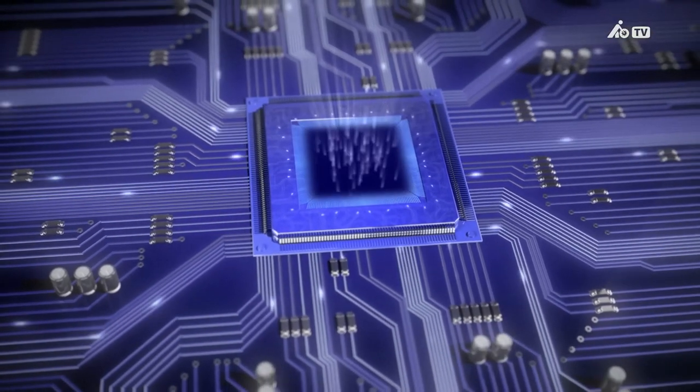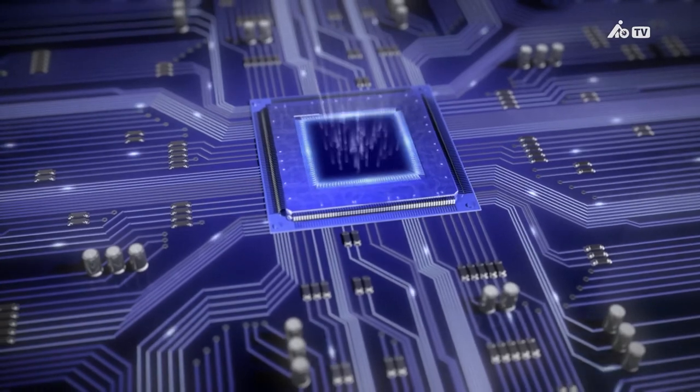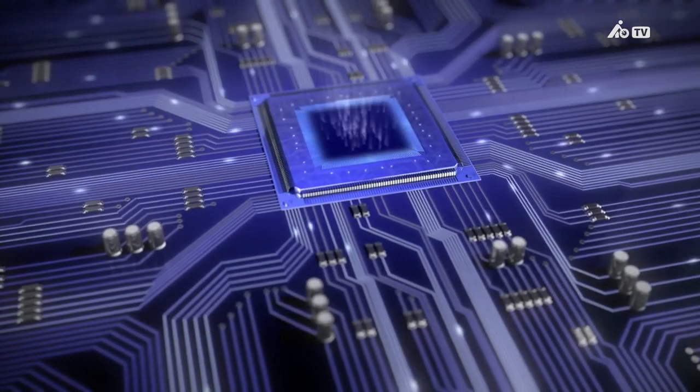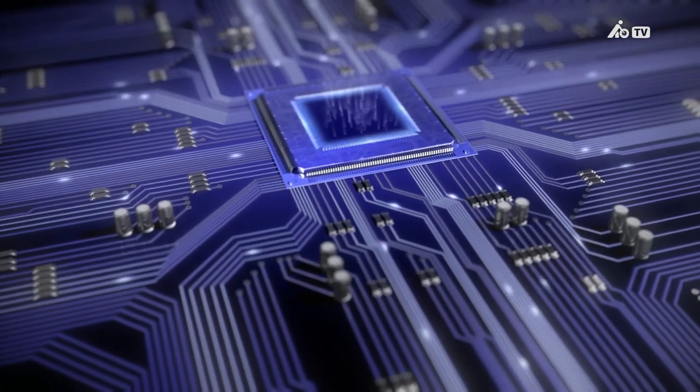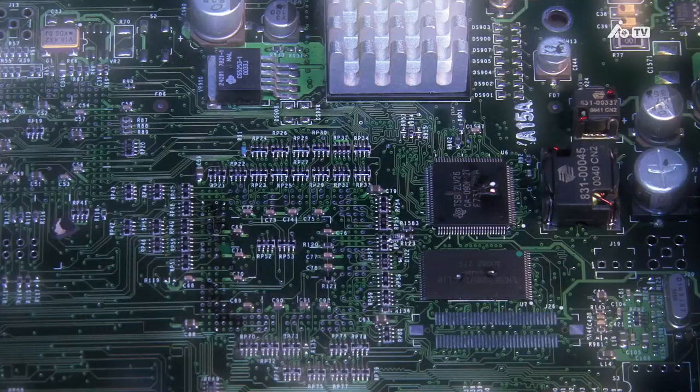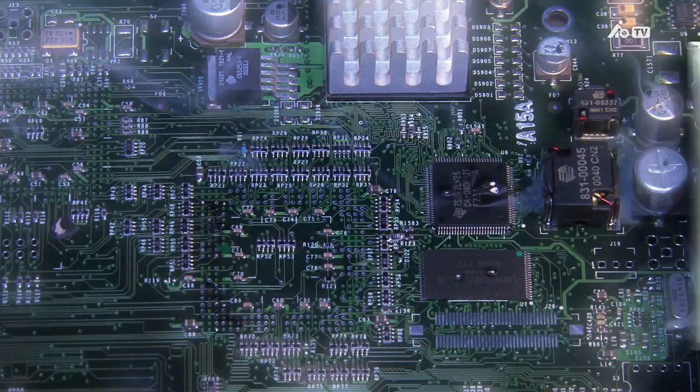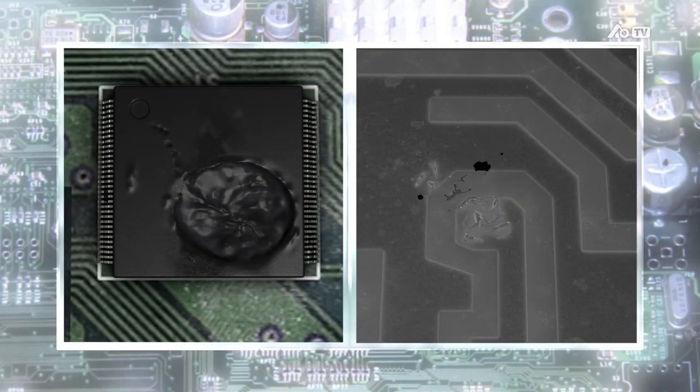The extremely thin conducting paths in active electronic components, like ICs, are often unable to withstand the high ESD voltages involved. Some of the damage sustained in this way is clearly visible, but some can only be seen under an electron microscope.